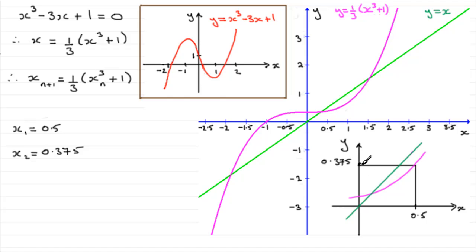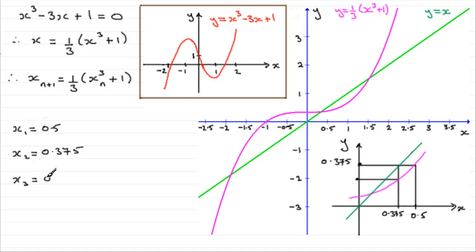We made this our new x value to get the third approximation. Because y equals x on the green line, bringing the value back along to the line gave us 0.375 as our new x. With that 0.375 put back into the equation, we come back up to hit the curve and got a new value — the third approximation x₃ turned out to be 0.3509, and so on.